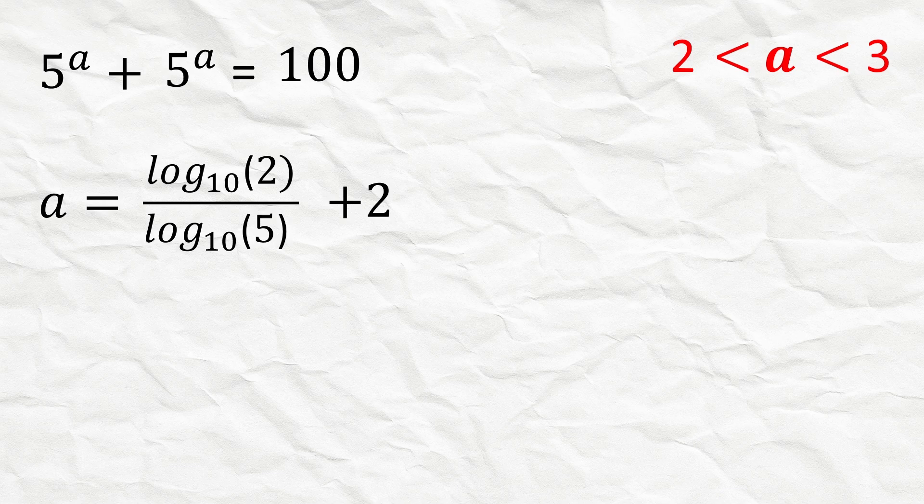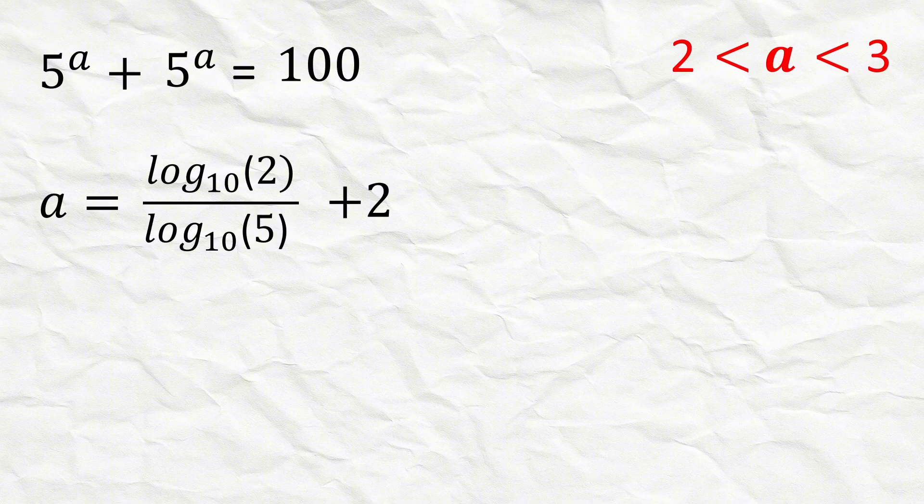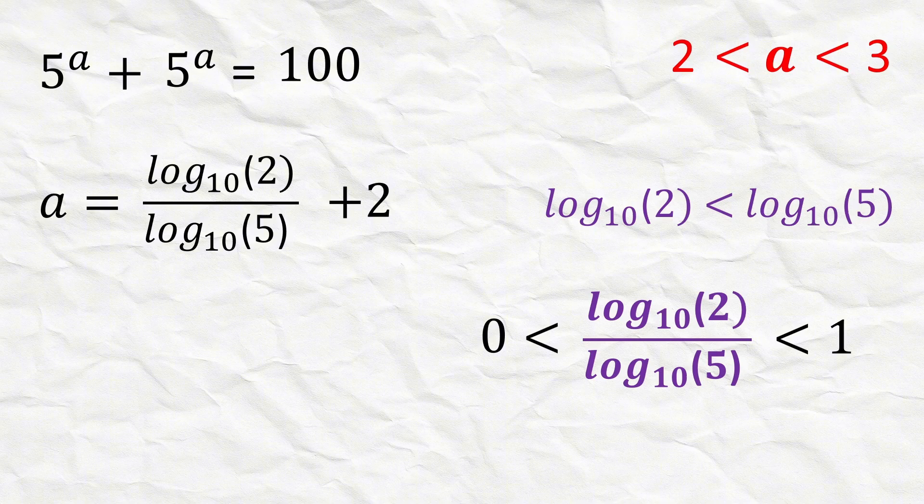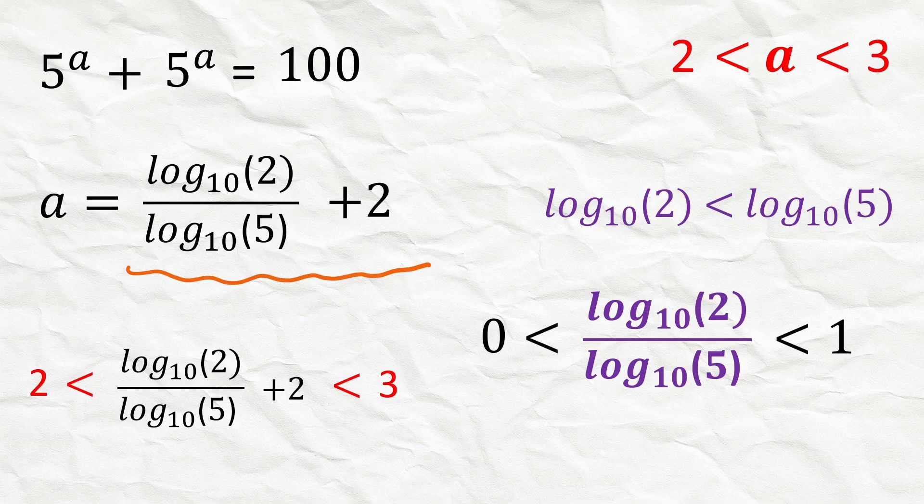So a equals log 2 over log 5 plus 2. Thus we can clearly see that log 2 is less than log 5, so log 2 over log 5 will be less than 1 and greater than 0. Therefore this 2 plus log 2 over log 5 will be less than 3 but greater than 2.